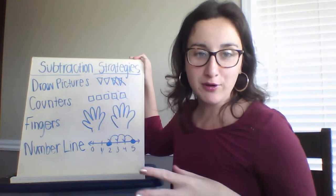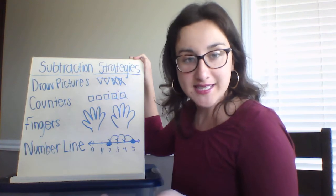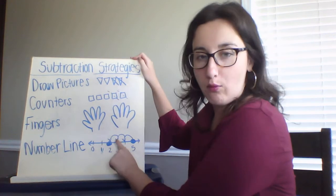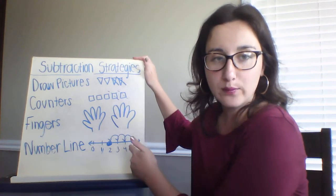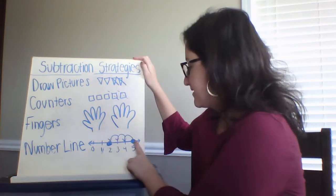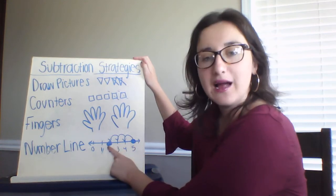You can use a number line to help you subtract. In addition, you can use a number line, but you would be going forward or you'd be going to higher numbers. In subtraction, you'll be going backwards or to lower numbers. So if I started with five and went backwards three, I would land on two.